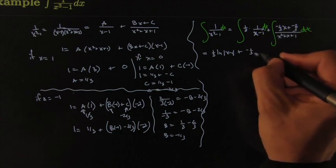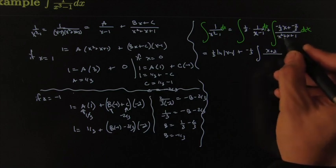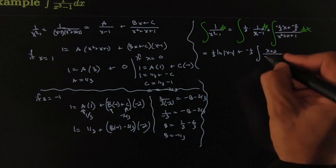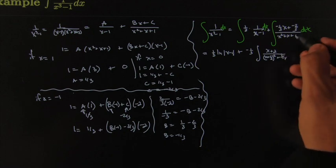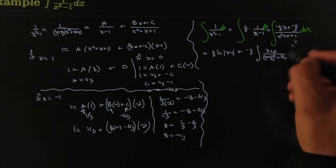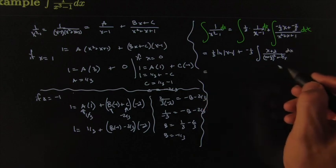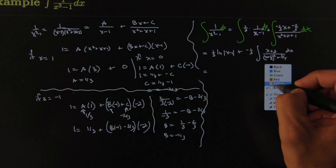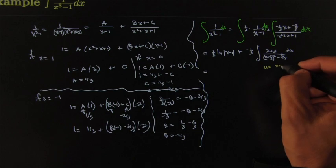For the second piece, you've got some algebra. You could pull out -1/3, leaving (x + 2) on top. On the bottom, complete the square — standard practice with a trinomial. I'll go with (x + 1/2)² + 3/4, because half of 1 squared is 1/4, and 1 - 1/4 = 3/4. For the substitution, let u = x + 1/2.